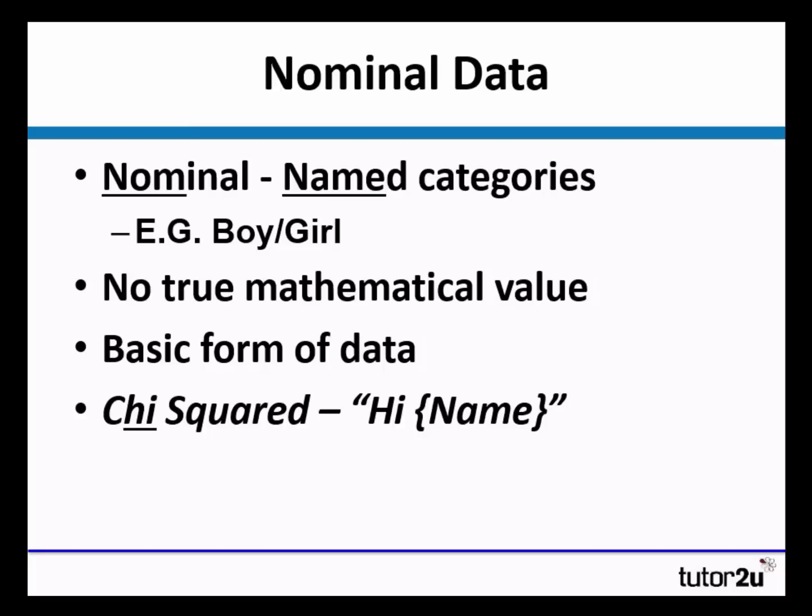And nominal data has no true mathematical value. It is the most basic form of data, and therefore does not have a value as such. There isn't girl, girl, girl existing in reality, as there would be for ordinal, interval or ratio data. So it's the most basic form.